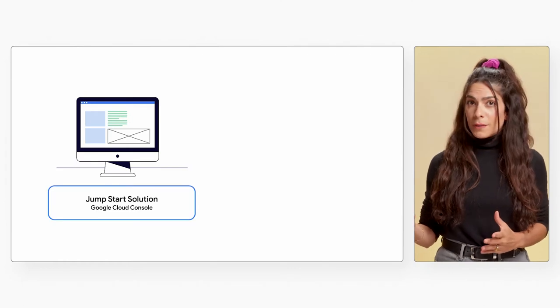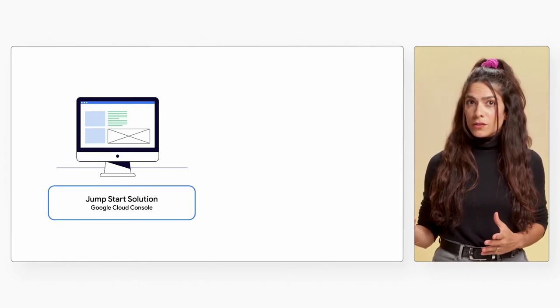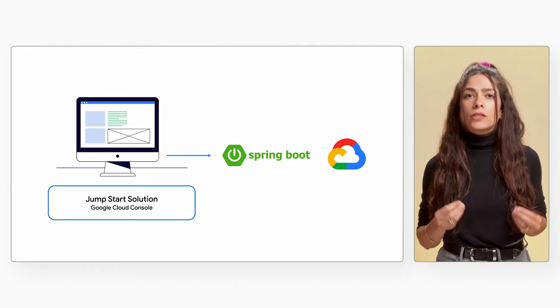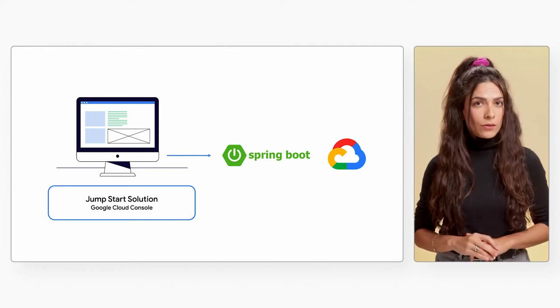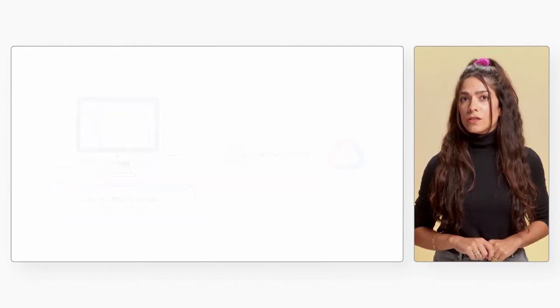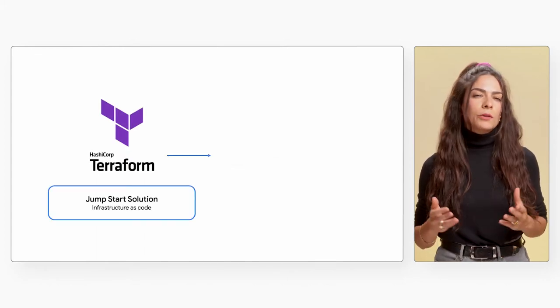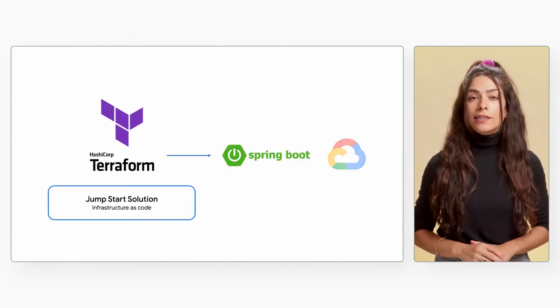If this is your first time hearing of a Jumpstart solution, they're a packaged Google Cloud resource that can be quickly deployed directly from the Google Cloud console. If you'd like to make changes to the solution, we've also built the foundation of these solutions in Terraform, which you can pull locally and customize to your liking. And while they're not intended for production use out of the box, they do contain patterns that can be adopted as you prepare your own Java dynamic web app for production in Google Cloud.